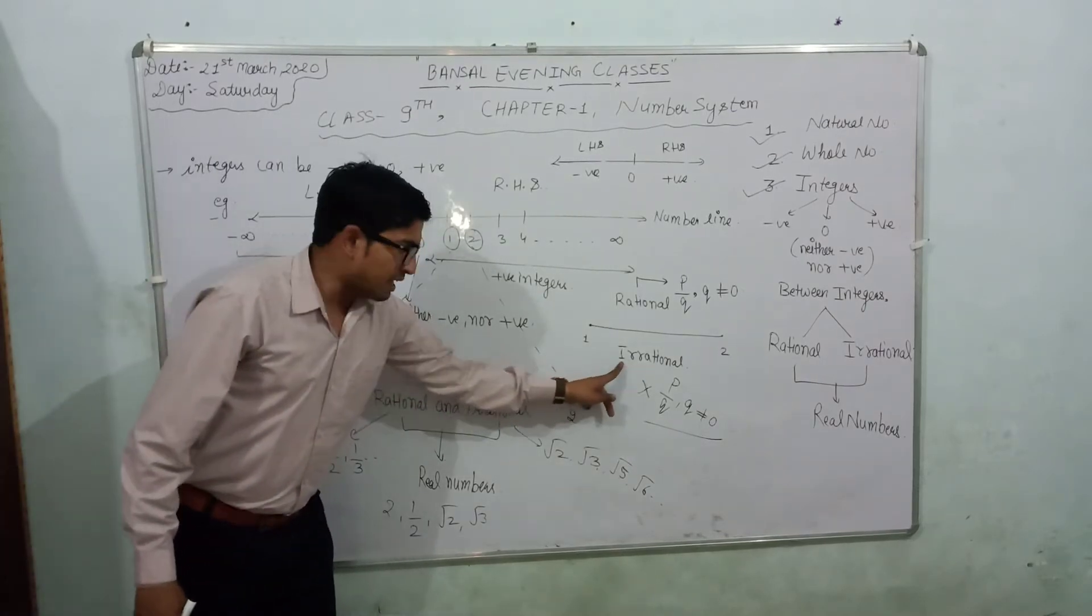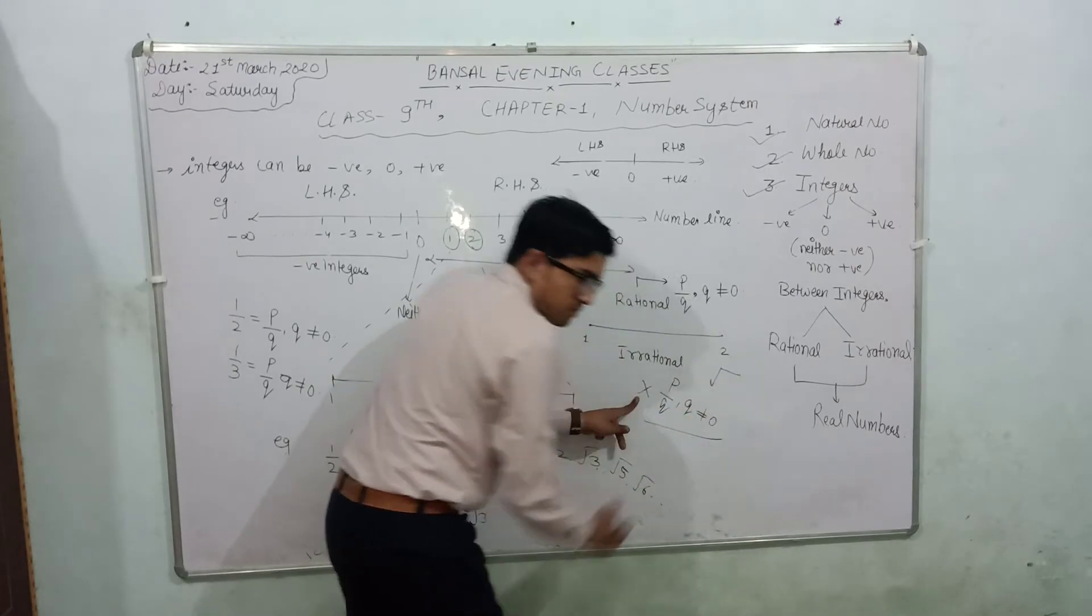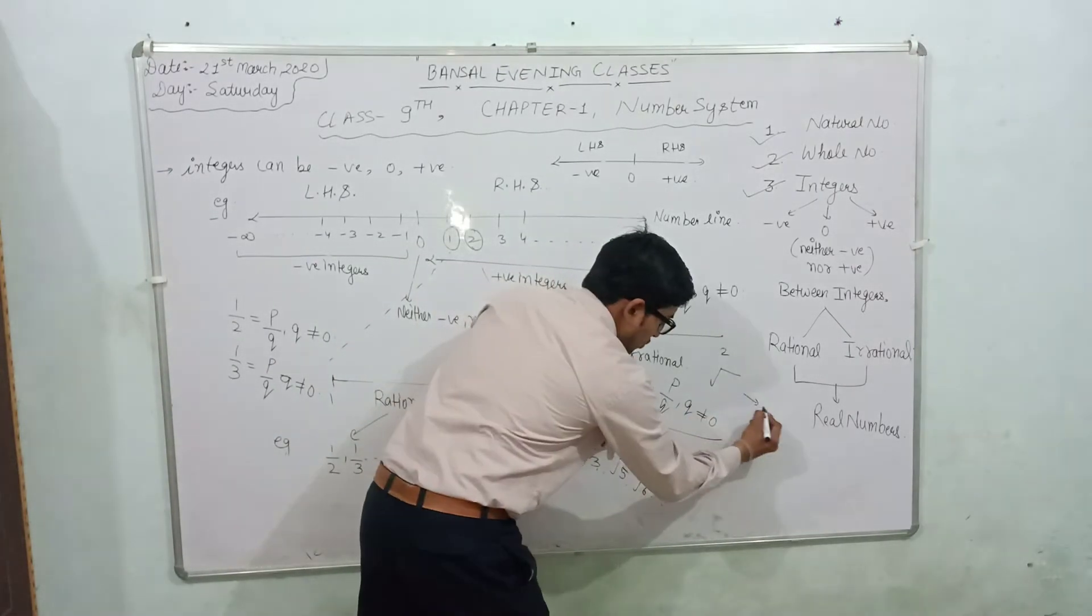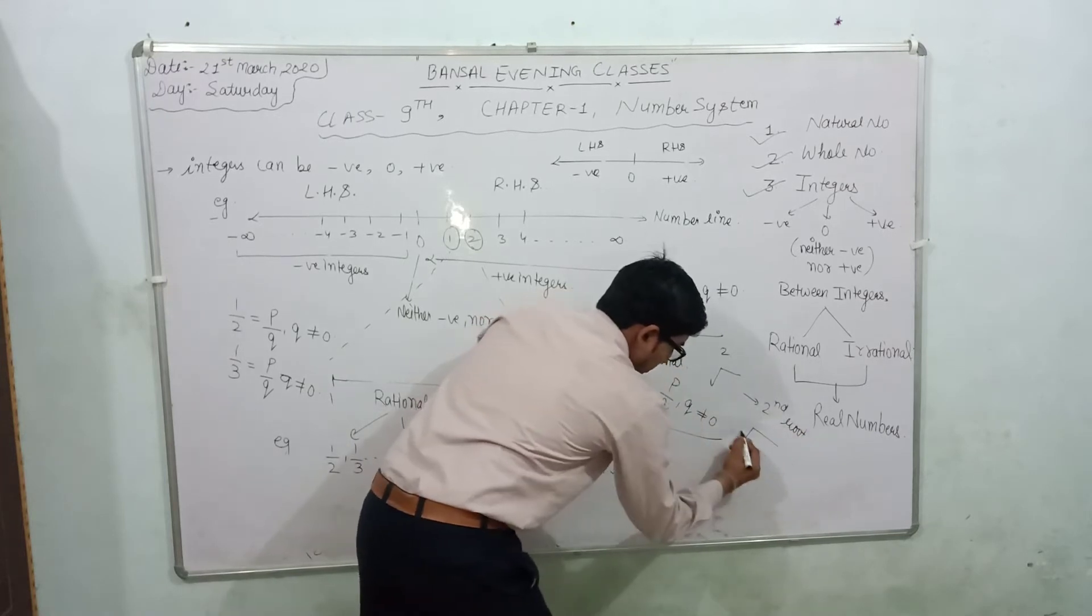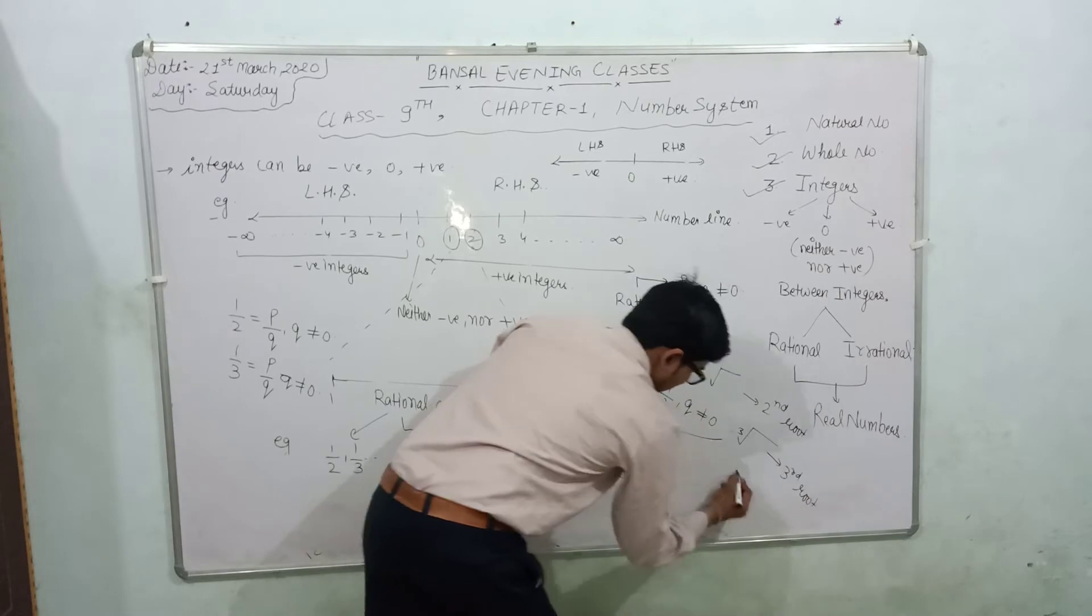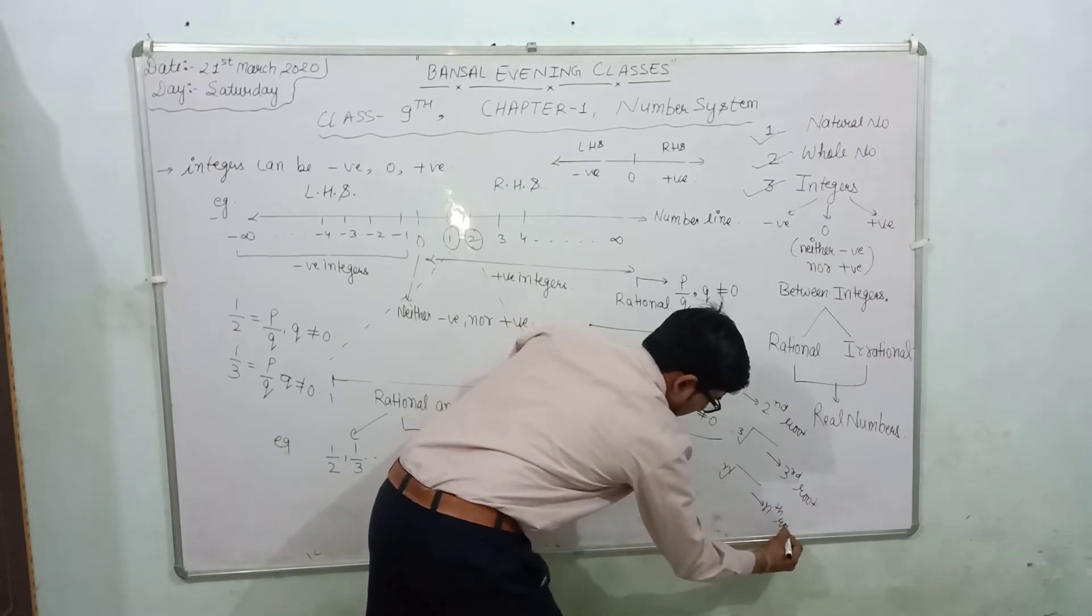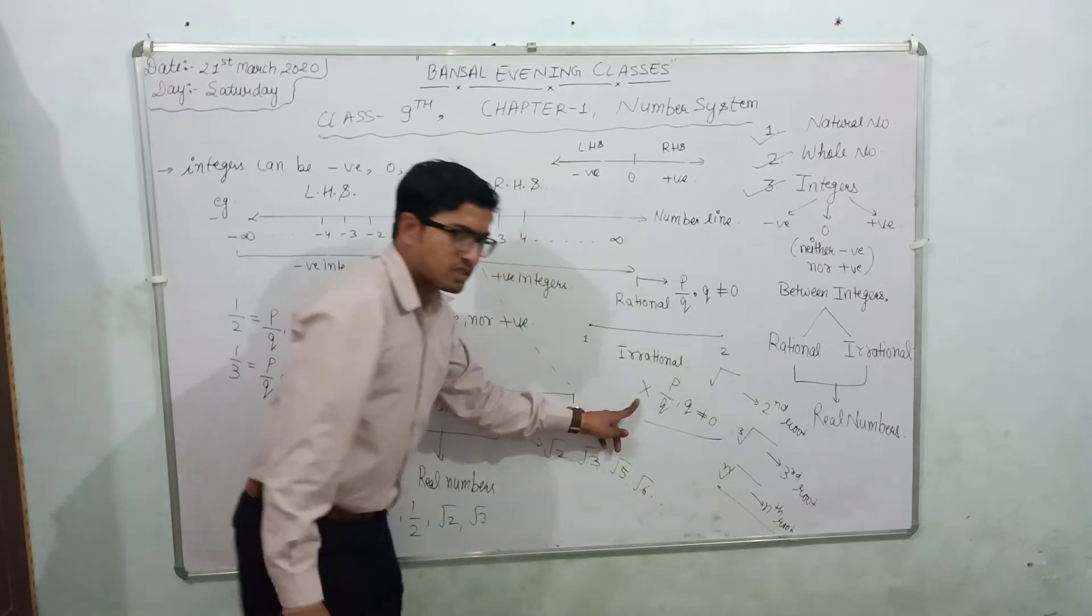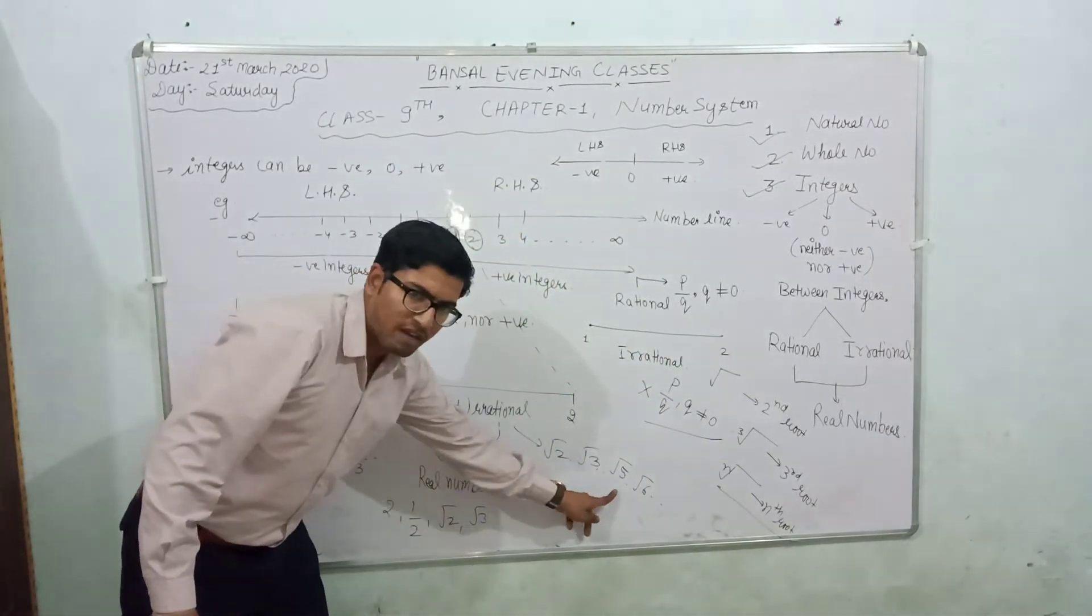Next, irrational numbers. Irrational numbers are those numbers which are written in the form of roots—this is square root, this is cube root, and this is nth root. Those numbers which are written in the form of roots are known as irrational numbers, like root two, root three, root five, root six.